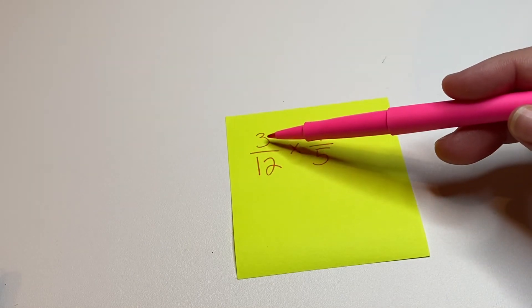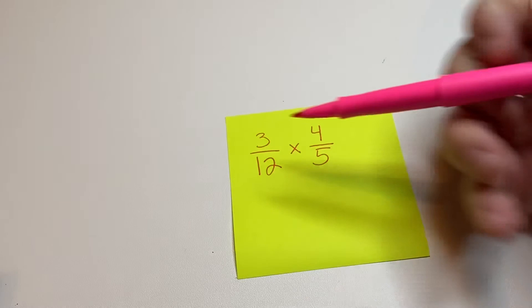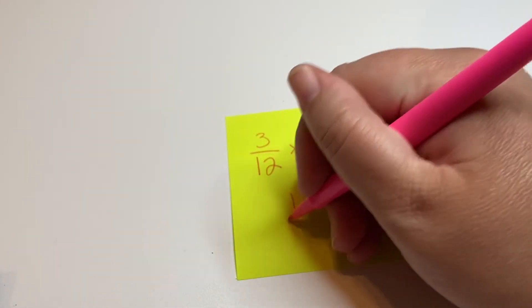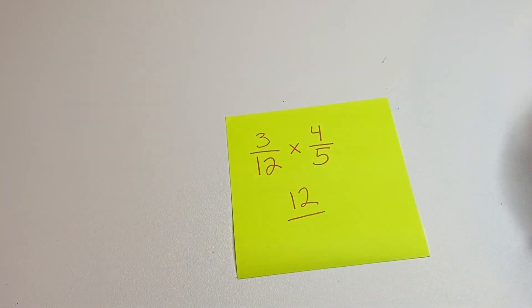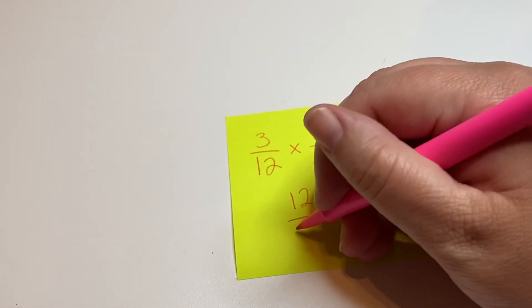So this one we're going to do 3 times 4, which is 12. And 12 times 5, denominator times denominator, which is 60.